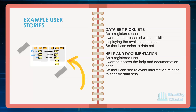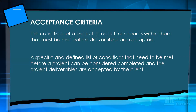Another user story: as a registered user, I want to access the help and documentation page so that I can see relevant information relating to specific datasets. Now, a user story isn't complete until you have the acceptance criteria. A user story on its own is just like a wishlist — 'I'd like to have a shopping list where I can see different products' — but how is that going to happen? You need some structure to help the developers create that product.